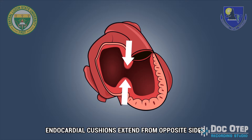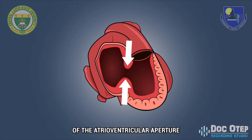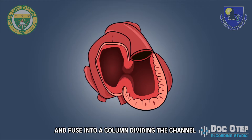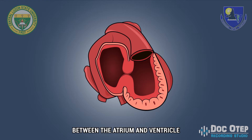Endocardial cushions extend from opposite sides of the atrioventricular aperture and fuse into a column dividing the channel between the atrium and ventricle.